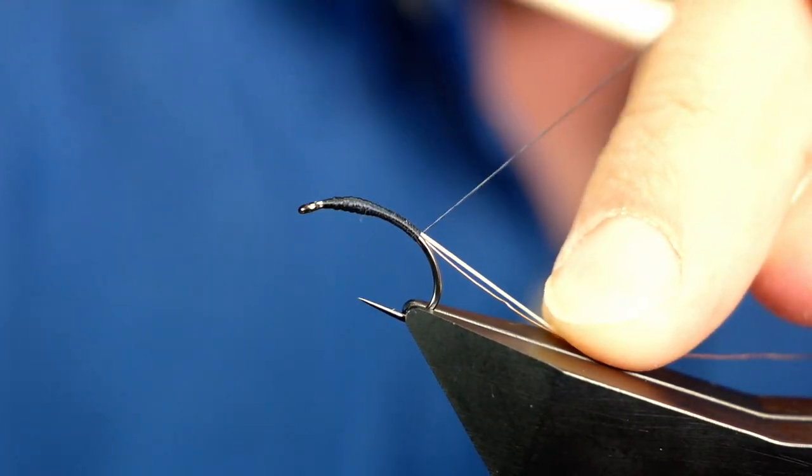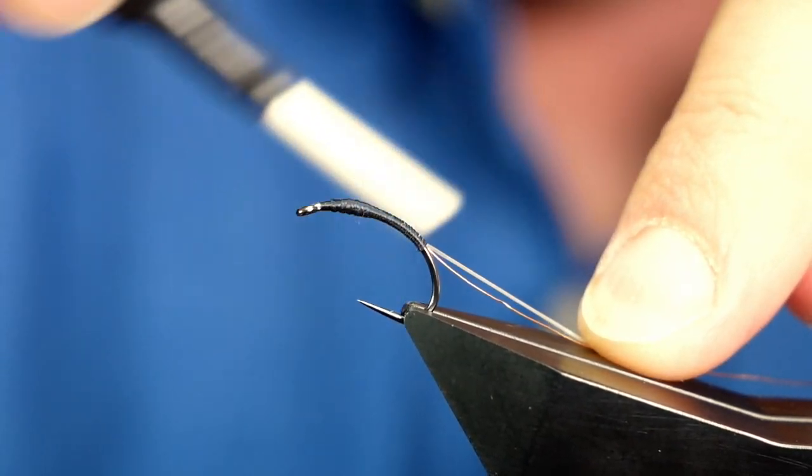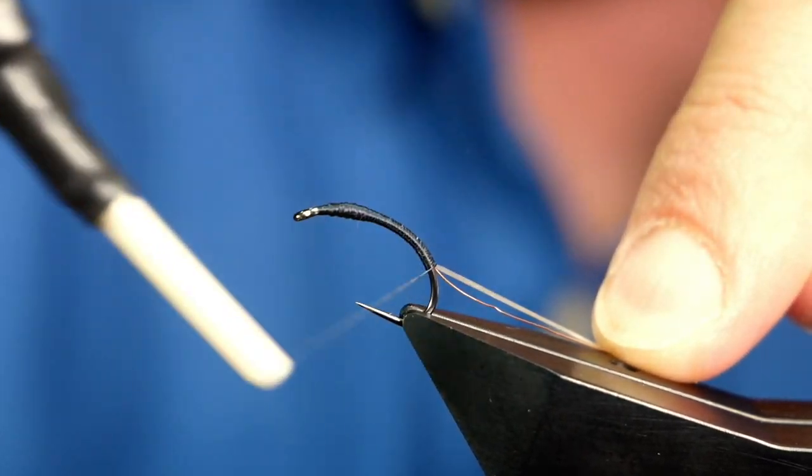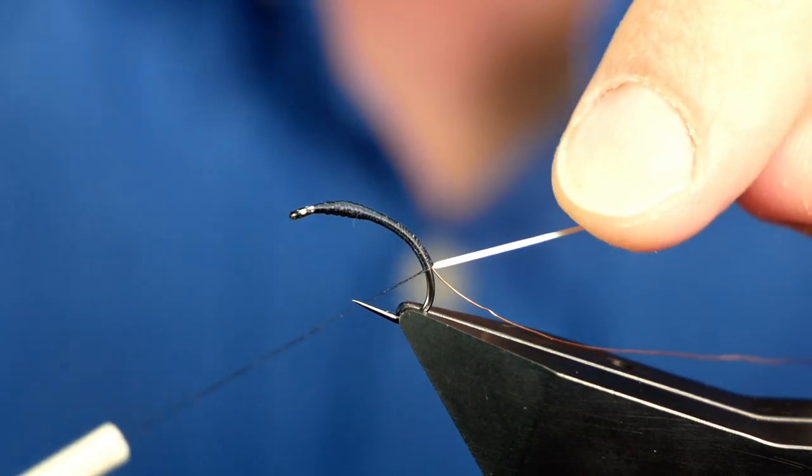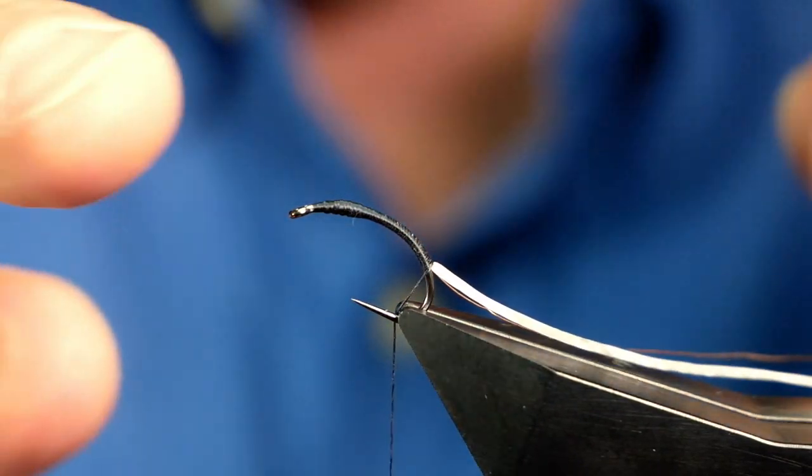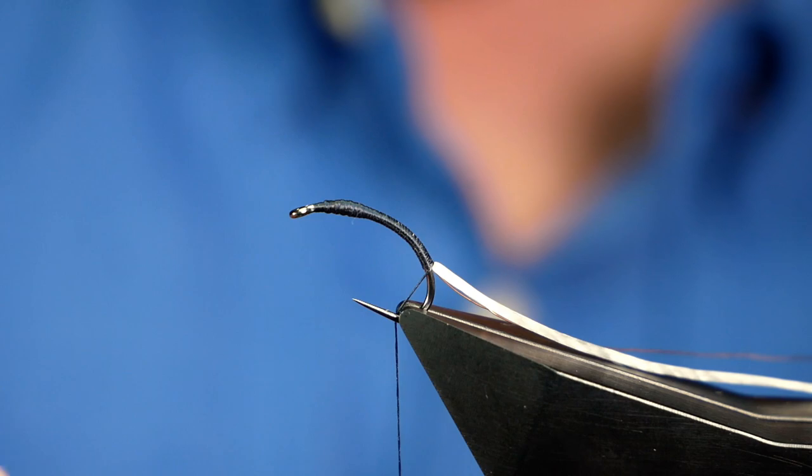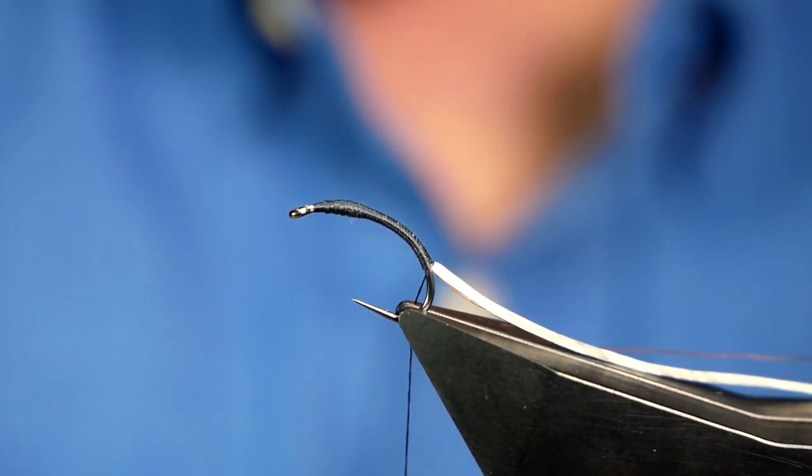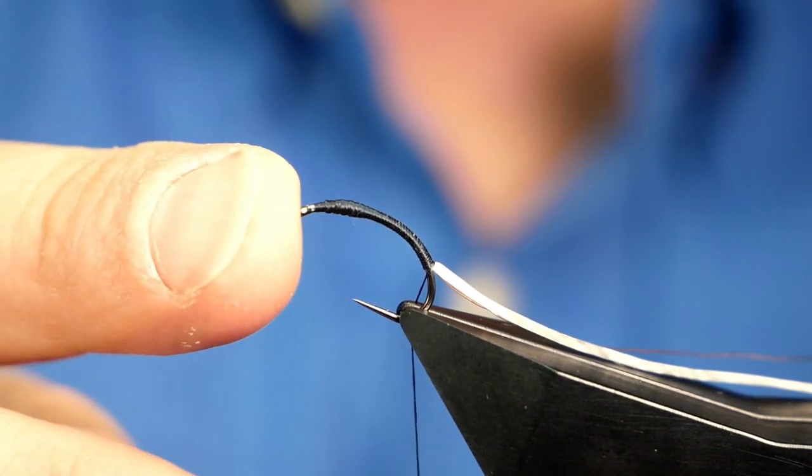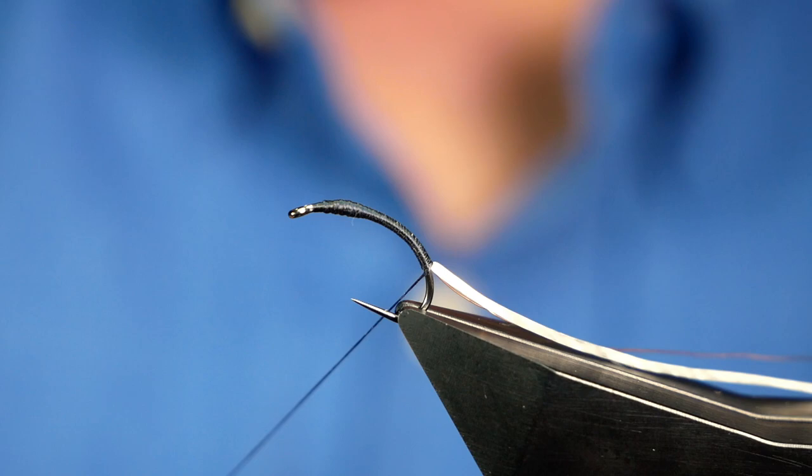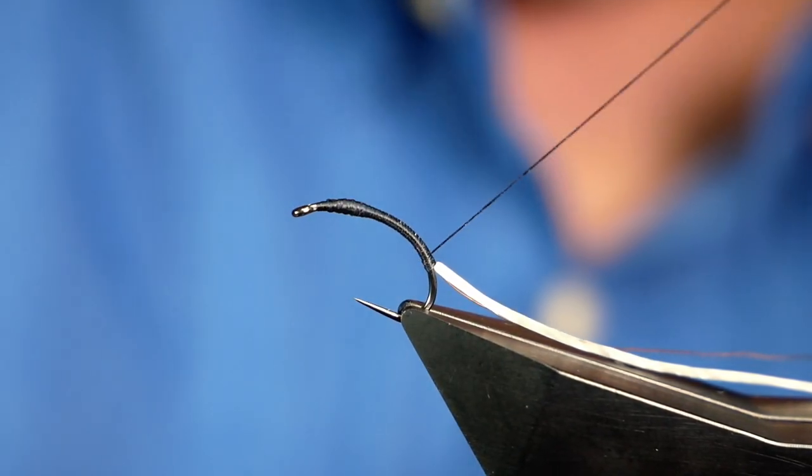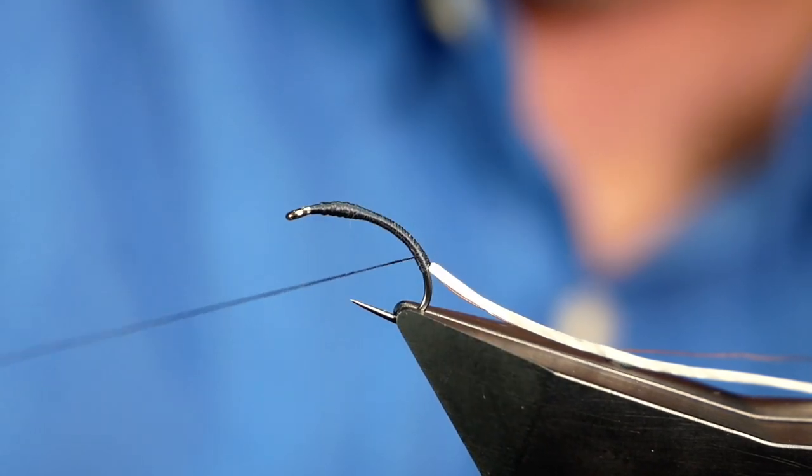Now by tying the ribbon, the copper ribbon at the same time, what I'm avoiding is any lumps or bumps near the bottom of the fly by catching that in later. So I've come right down around the bend of the hook. I want a nice curved buzzer.